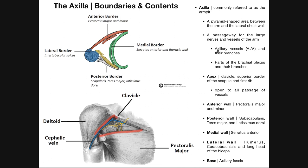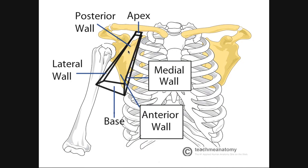For example, we have the axillary vessels — axillary artery, axillary vein, and their branches. And then also we're going to have a lot of parts of the brachial plexus and their branches. That's why we'll come back and look at this in much more detail later, to see how these things branch and get to various parts of the arm. But note that they're going to be traveling in that axilla to get to the arm.